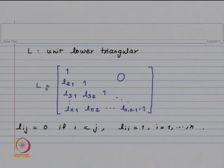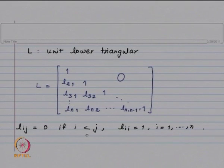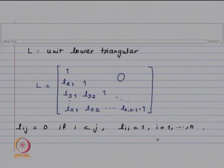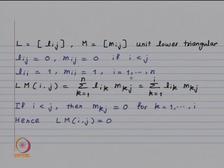The structure of matrix L is of this form: along the diagonal we have ones, the part below the diagonal can have non-zero entries or zero entries, but the elements above the diagonal are going to be 0. So L_ij = 0 if i < j, where i denotes the row index and j denotes the column index, and L_ii = 1 for i = 1 up to n. Matrix M has a similar form.